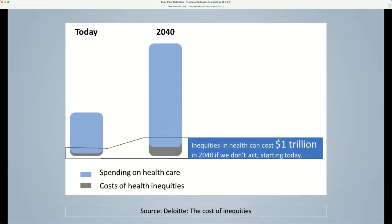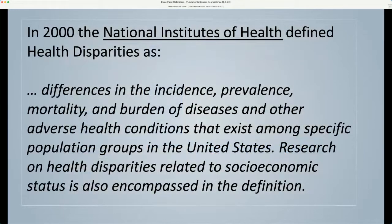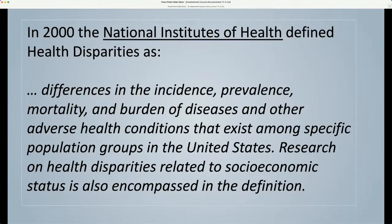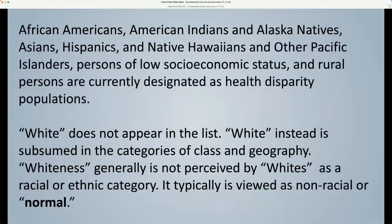The term health disparities generally refers to what the NIH in 2000 defined as differences in the incidence, prevalence, mortality, and burden of diseases and other adverse health conditions that exist among specific population groups in the United States. African Americans, American Indians, Alaska Natives, Asians, Hispanics, Native Hawaiians, and other Pacific Islanders, persons of low socioeconomic status, and rural persons are currently designated as health disparity populations. White does not appear in the list — whiteness generally is not perceived by whites as a racial or ethnic category; it typically is viewed as non-racial or normal.